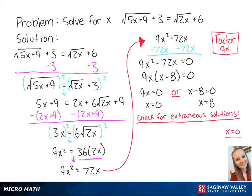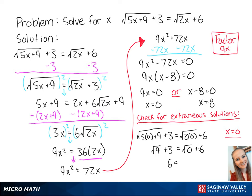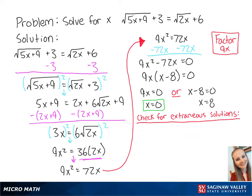We'll start by checking x equals 0, plugging 0 into the original equation. This gives us the square root of 5 times 0 plus 9, plus 3, equals the square root of 2 times 0 plus 6. This becomes the square root of 9 plus 3 equals the square root of 6, which finally becomes 6 equals 6. This is correct, so x equals 0 is one of our answers.